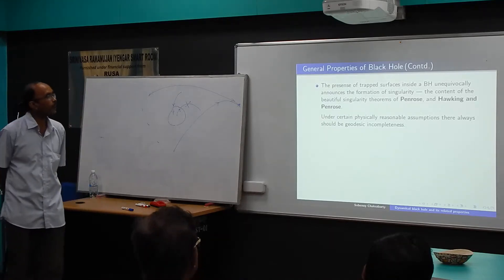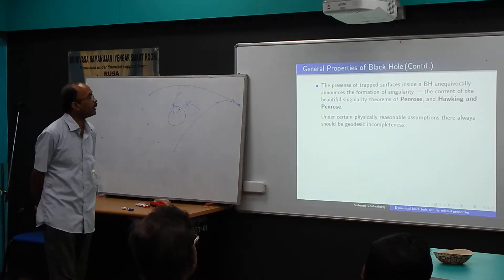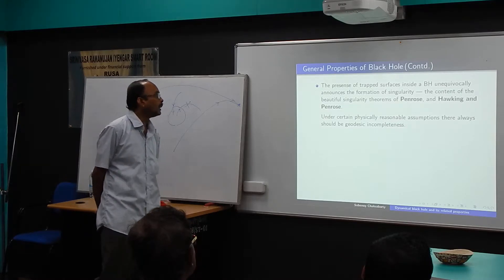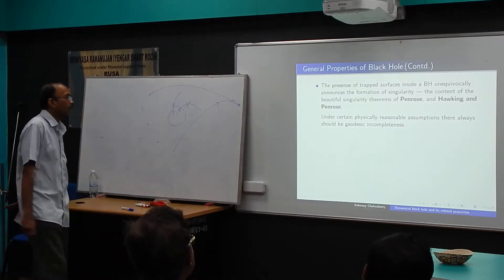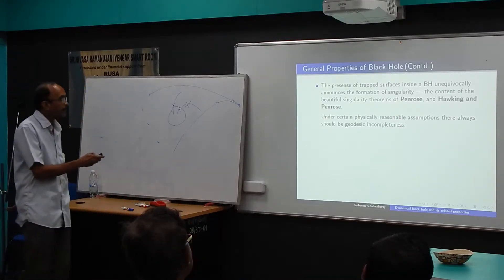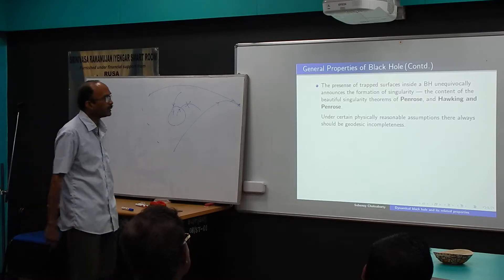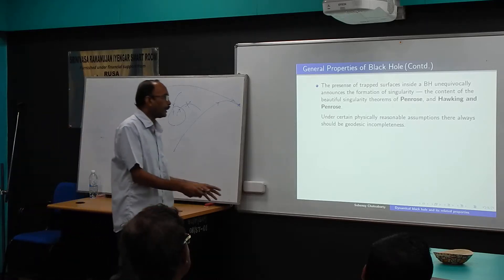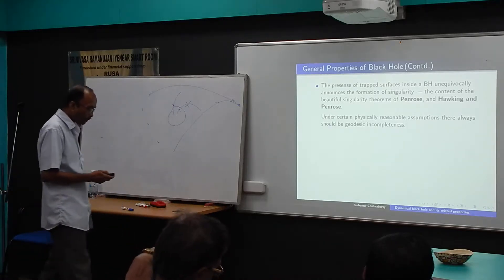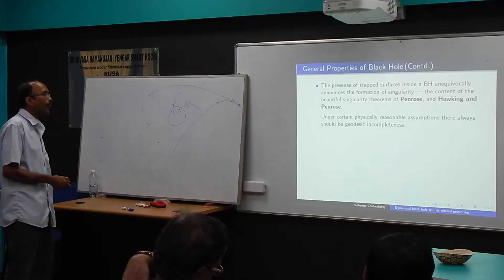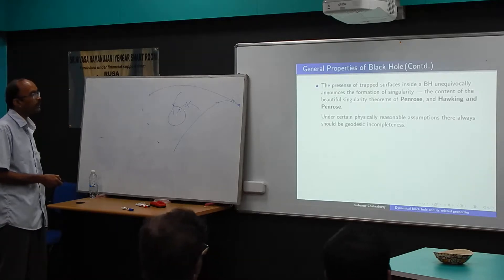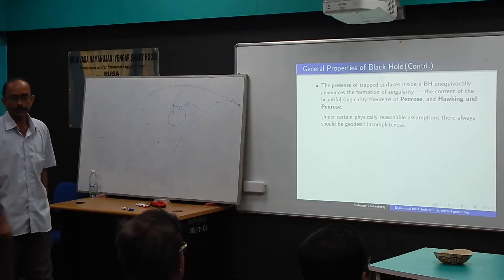Those singularities are identified by Penrose alone and then in collaboration with Stephen Hawking. These are known as the Penrose and Hawking singularity theorems. Singularity means that in the spacetime there is the assumption of geodesic incompleteness.